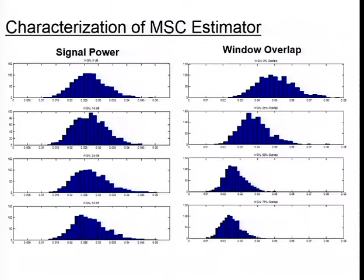The story is different when we look at window overlap. As you increase the window overlap within the coherence calculation, there is a decrease in bias and variance. The plots show 0%, 25%, 50%, and 75% overlap. We chose to use 50% overlap because there appear to be diminishing returns as you increase overlap beyond that point.